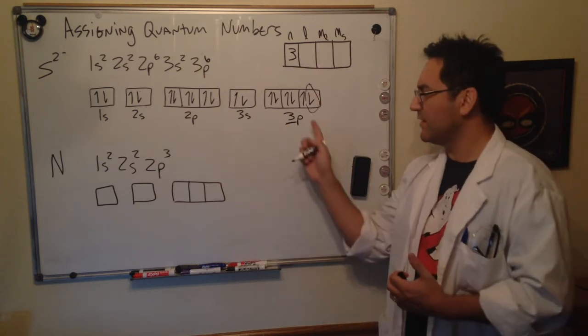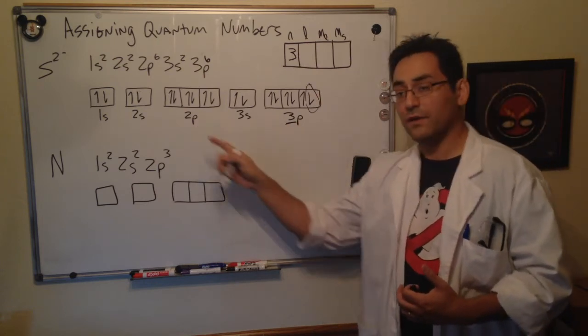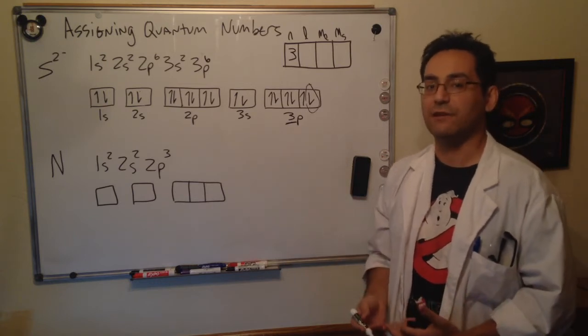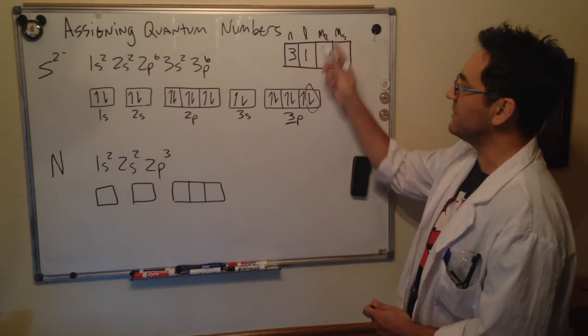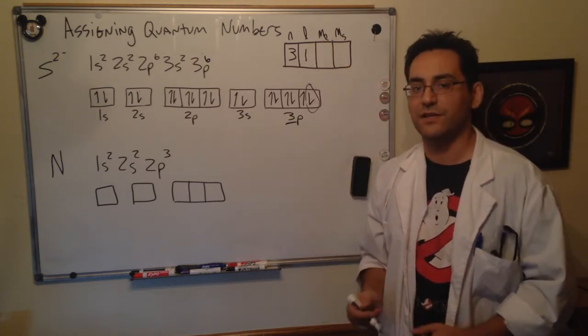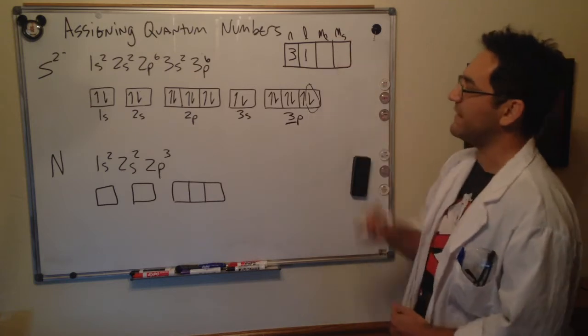Now what's l going to be? l is determined, or in another way to say it, l determines the type of subshell we have. Since this is p, we already know that l then must equal one. When l is zero we get the s shells, when l is two we get the d shells.